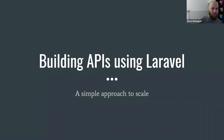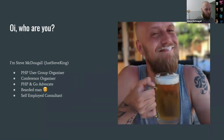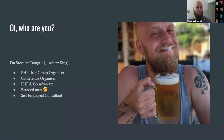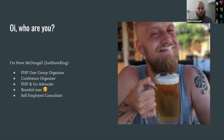But this time I thought I'd do it a little bit different. So who am I? I'm Steve McDougall. You'll find me most places on the internet as just Steve King — I'm one of those guys who decided to take his wife's name. I am a PHP user group organizer; I started PHP South Wales over two years ago and recently handed it over to Oliver Davies. I'm a conference organizer around South Wales, a huge PHP and Go Lang advocate, a bearded man, and a self-employed consultant where the majority of my work is consulting on API design, API scaling, and basic technical strategy with clients from all over the world.